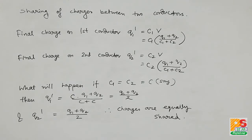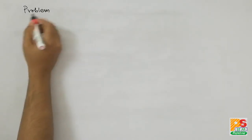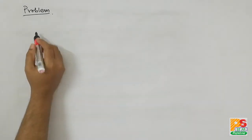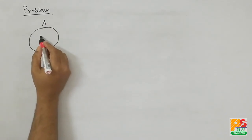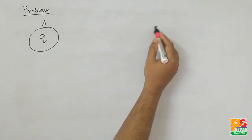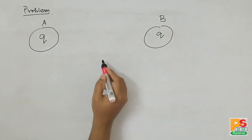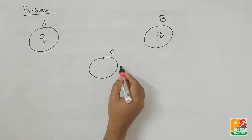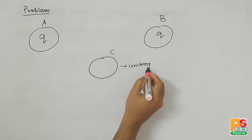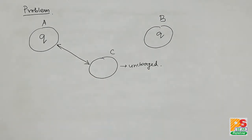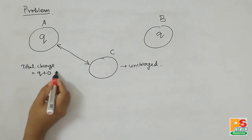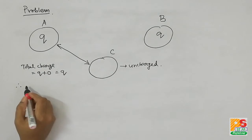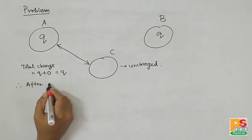Now let's come to a problem. In this problem we have three conductors — three spherical balls A, B, and C. The charge on A is Q, the charge on B is Q, and C is uncharged.